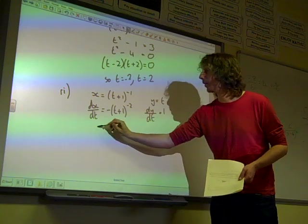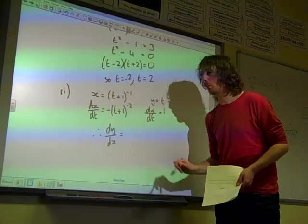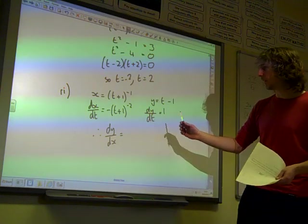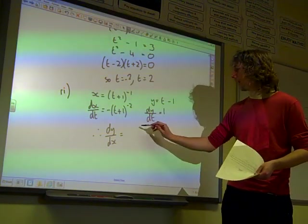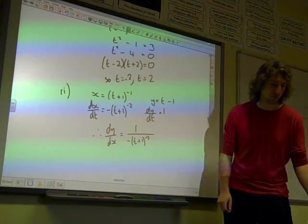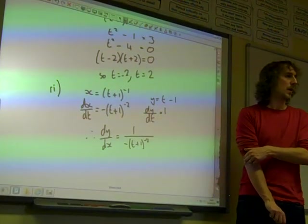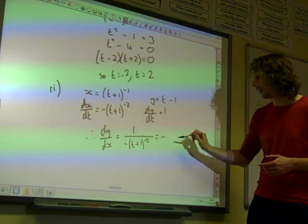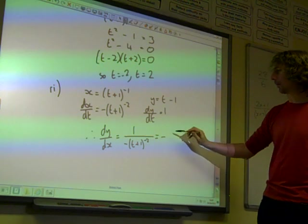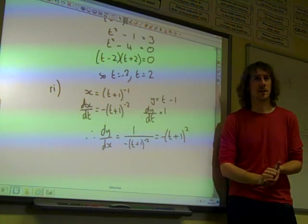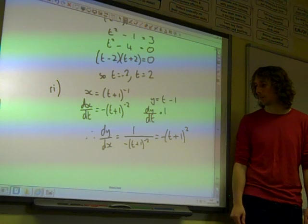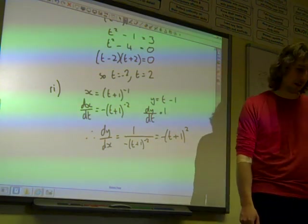So dy by dx, and I would find dy by dx first. Don't try and do anything clever about it being normal. Find dy by dx and then work from there. This is dy by dt over dx by dt. So that's 1 over minus t plus 1 to the minus 2. Well, actually, this whole thing is negative, but if we're dividing by t plus 1 to the minus 2, then that's the same as multiplying by t plus 1 squared, isn't it? Okay, that negative power on the bottom there becomes a positive power on the top. Okay, so that's the value of dy by dx.